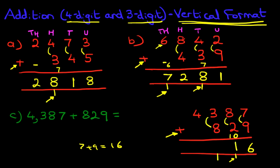Now, we've got the hundreds. We've got 3 plus 8. So, what is 3 plus 8? 3 plus 8 is 11. 7 plus 1 is 12.